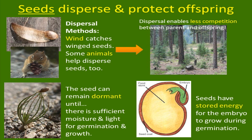The seed can remain dormant — that is the mechanical advantage to having a seed. It is protected and can remain dormant until there is sufficient moisture and light for germination and growth. The seeds do have some stored energy for the embryo to grow during germination: a food store, a seed coat, and the little embryo that's going to use that food store to grow its leaves.